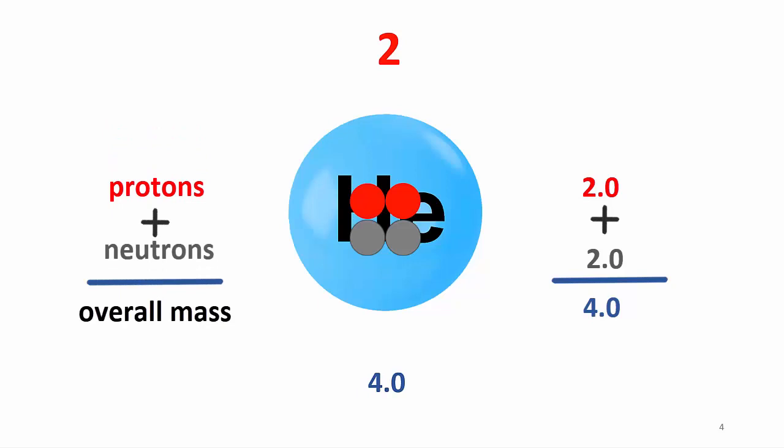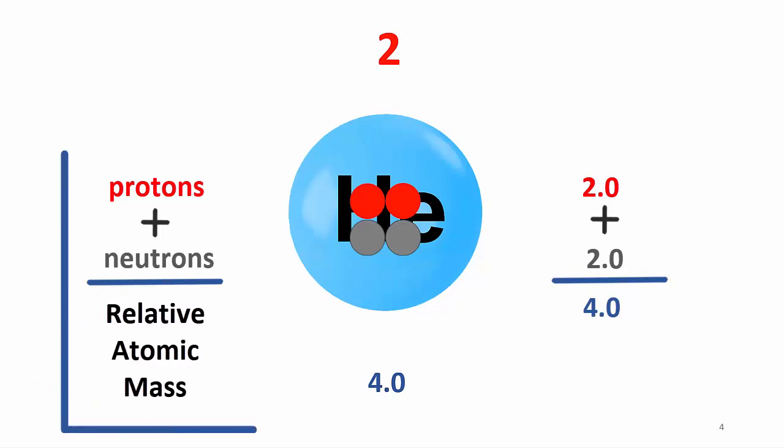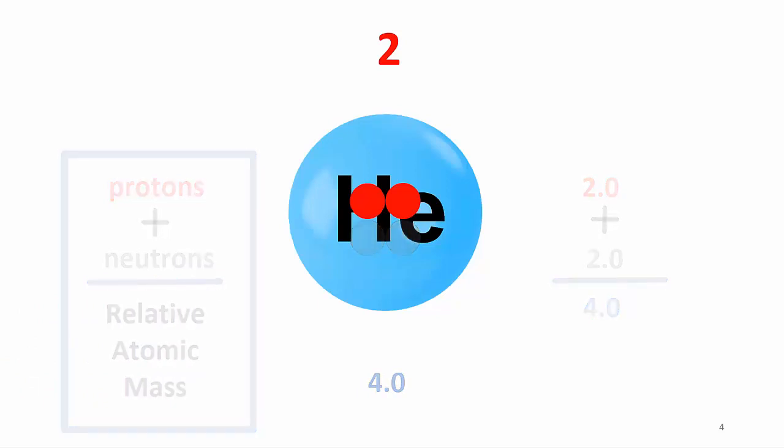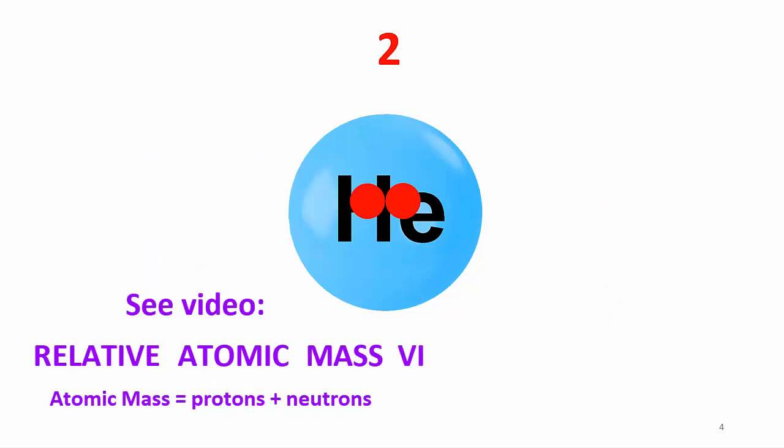Protons plus neutrons equal the overall mass. That is, the relative atomic mass. To revise this, check the video Relative Atomic Mass 6. Atomic mass equals protons plus neutrons.